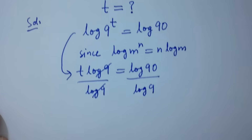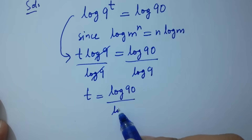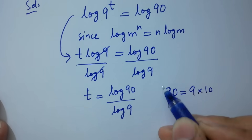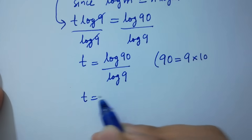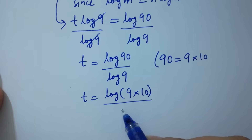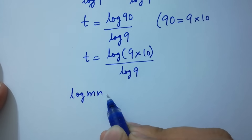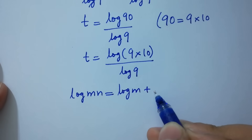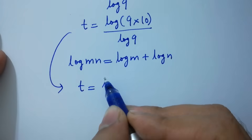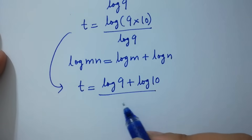Log 9 and log 9 cancel. t equals log 90 over log 9. Now, 90 equals 9 times 10, so t equals log of 9 times 10 over log 9. Using log mn equals log m plus log n, t becomes log 9 plus log 10 over log 9.